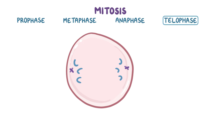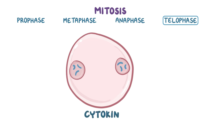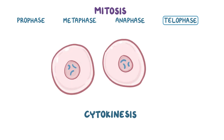Finally, there's the telophase, during which a nuclear membrane forms around each new set of 46 single chromatid chromosomes. After that, during cytokinesis, the cell membrane pinches in until the two daughter cells separate.